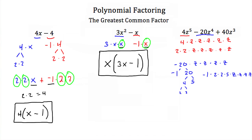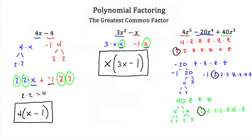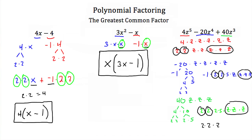For 40z cubed, that breaks down into 40 times z three times. The 40 breaks into 4 times 10, the 4 into 2 times 2, and the 10 into 2 times 5 — so 2 times 2 times 2 times 5 times z three times. Now we find what's common in all three terms: there are two 2s common in all three, and three z's common in all three terms.